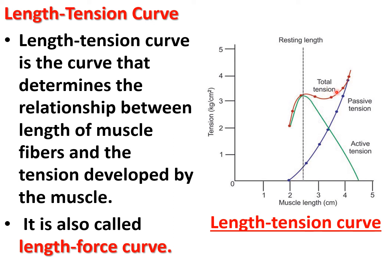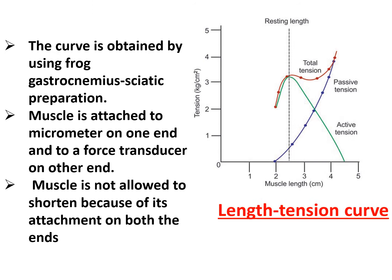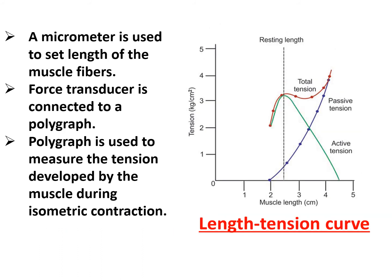This shows total tension, passive tension, and active tension plotted on the graph. Tension is plotted vertically and muscle length in centimeters is plotted horizontally. The curve is obtained using frog's gastrocnemius sciatic nerve preparation. The muscle is attached to a micrometer on one end and to a force transducer on the other end, and is not allowed to shorten due to its attachment on both ends. A micrometer is used to set the length of the muscle fiber, and the force transducer is connected to a polygraph.